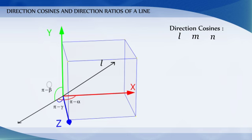Any three numbers which are proportional to the direction cosines of a line are called the direction ratios of the line.